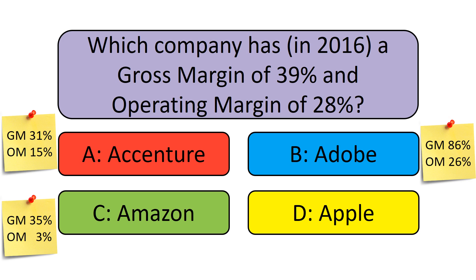Amazon's Gross Margin is 35% and Operating Margin 3%. Apple's Gross Margin is 39% and Operating Margin 28%. So the answer to our quiz question is D — Apple.